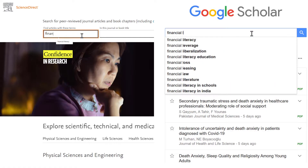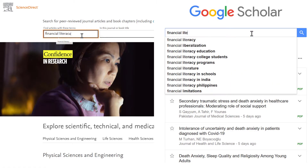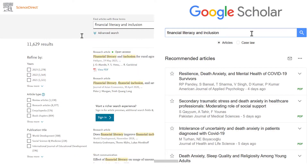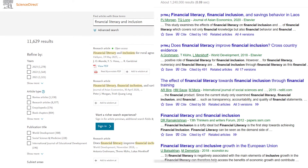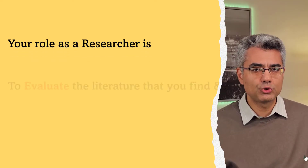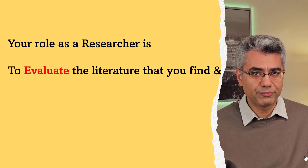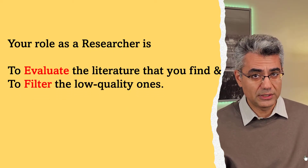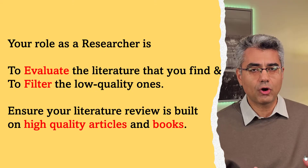To search, use search engines and databases like Google Scholar, Science Direct, and Scopus, and use Boolean operators to improve your search results. For an efficient search, see my video on searching for literature — I will post a link in the description below. Please keep in mind that your role as a researcher is to assess and evaluate the literature you find and filter out the low-quality ones, so ensure that your literature review is built on high-quality articles and books. To know how to evaluate research sources, watch my video on quality assessment of literature sources.